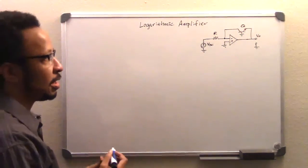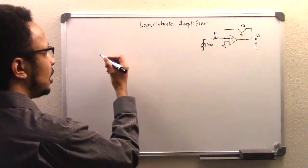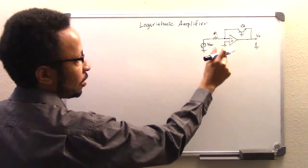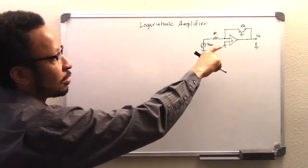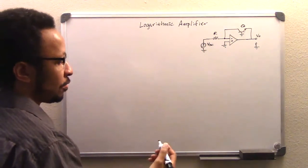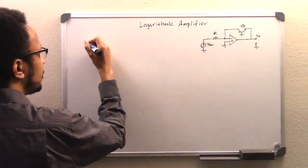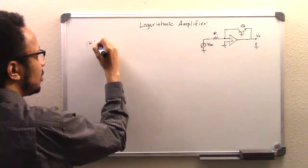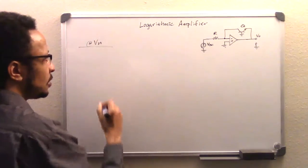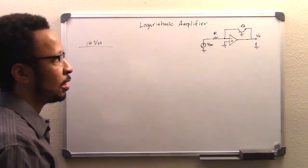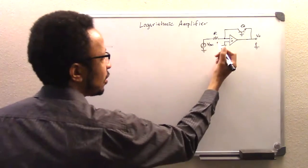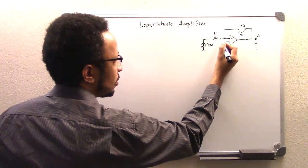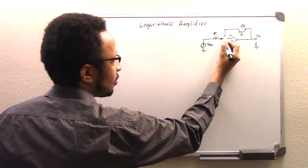So to begin with our analysis here, we're going to start at this node here, which is the node connected to the inverting terminal of the op-amp, which we'll refer to as being VN. And so at node VN, we're going to apply Kirchhoff's current law. Just going to make some arbitrary current directions here.